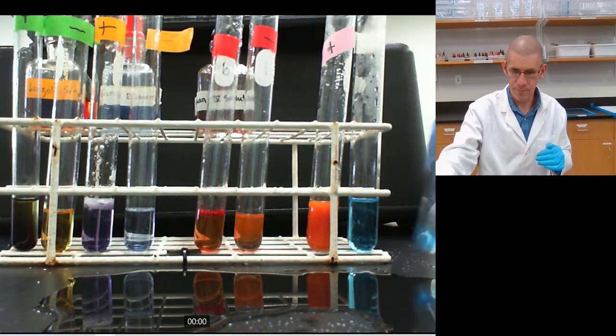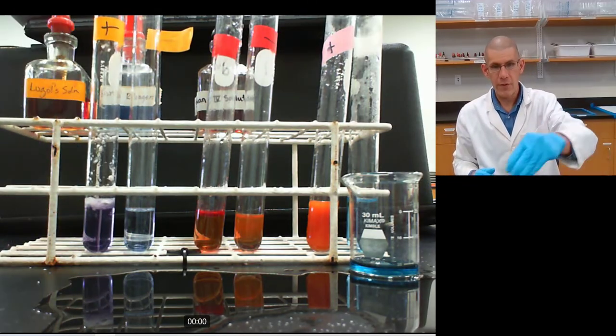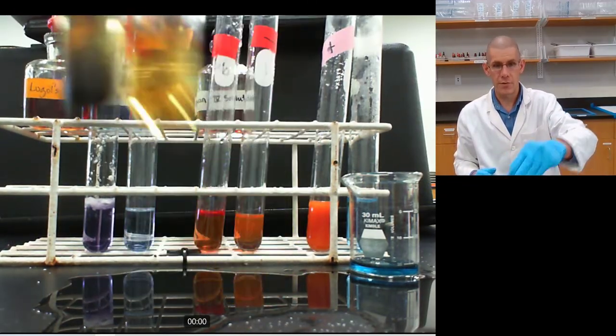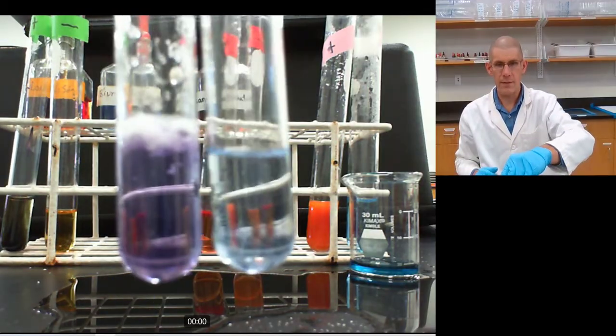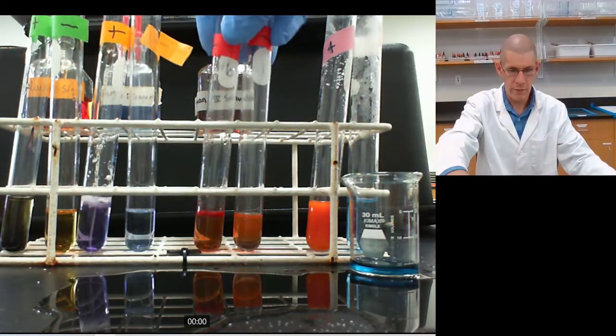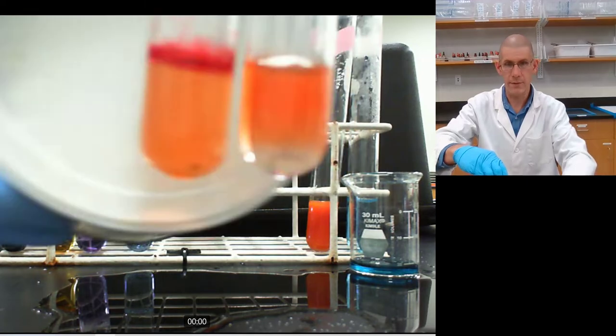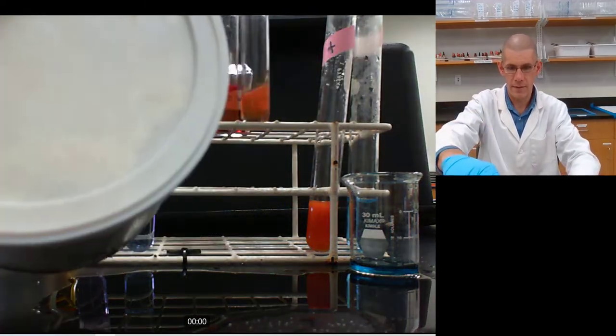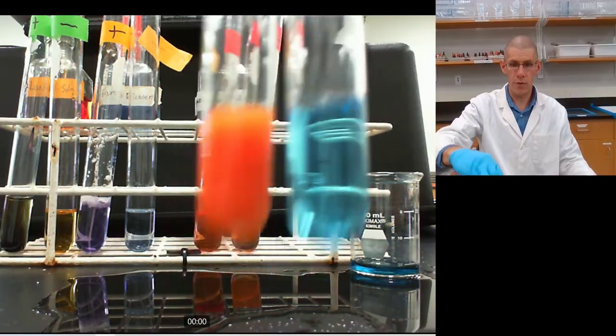for Lugol's, turns black from orange. For biuret, turns purple from blue. Sudan IV develops a thin red scum at the top, there you go, you can see it easily there. And Benedict turns orange from blue.